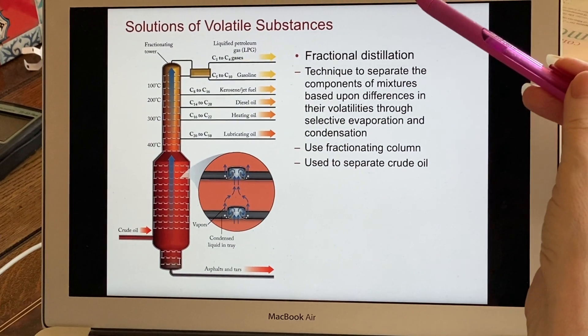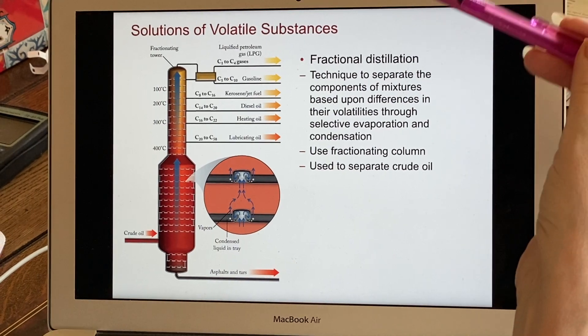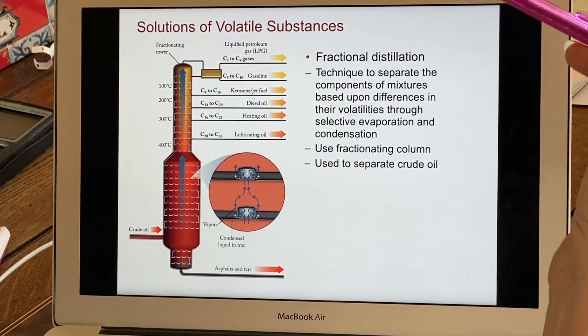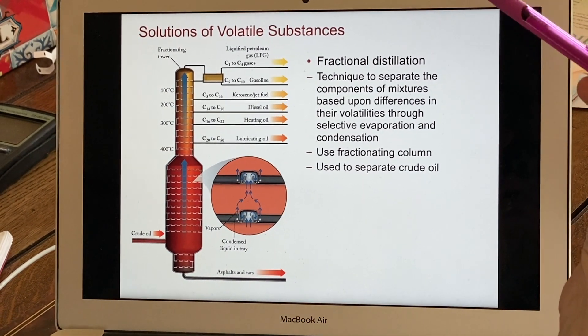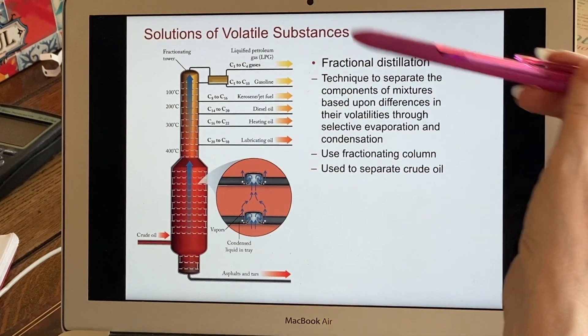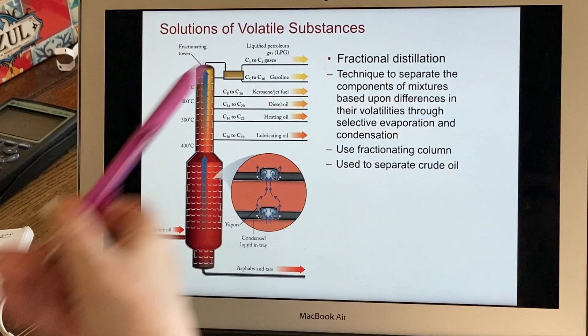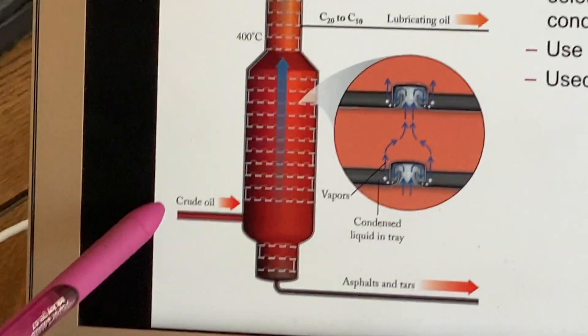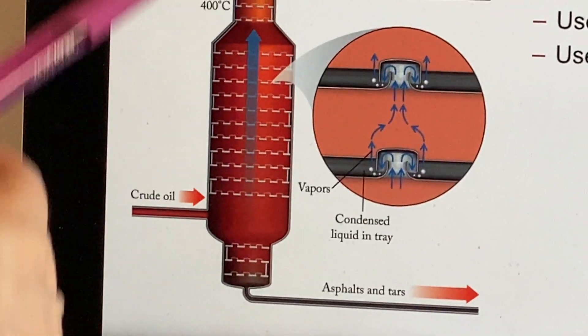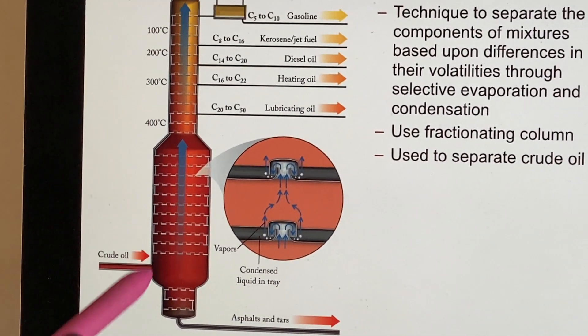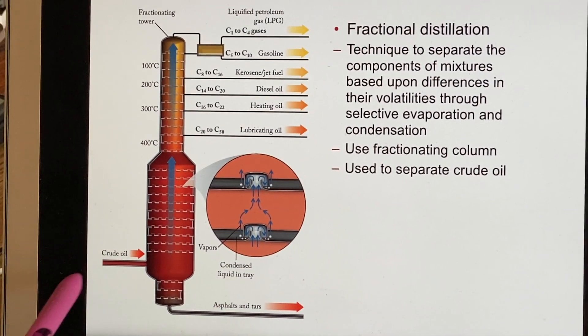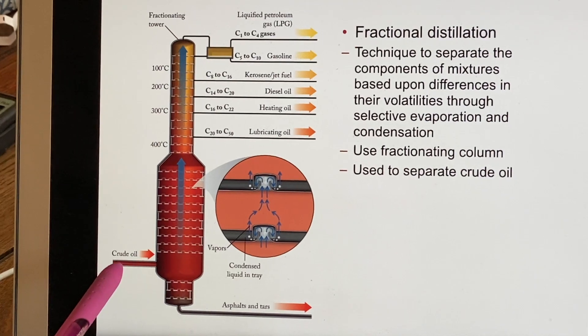What we discover out in nature is that these volatile substances do not separate themselves. They come in solutions, they are mixed together, and one of the most common is actually crude oil. This is a fractionating tower and this is how they separate the crude oil into its various components which are then used for different things.